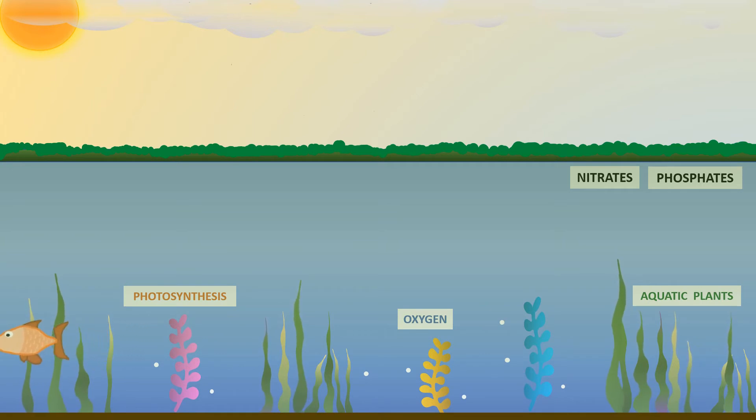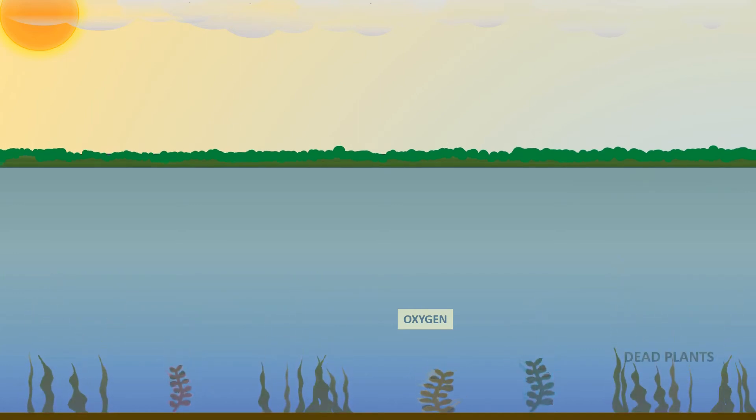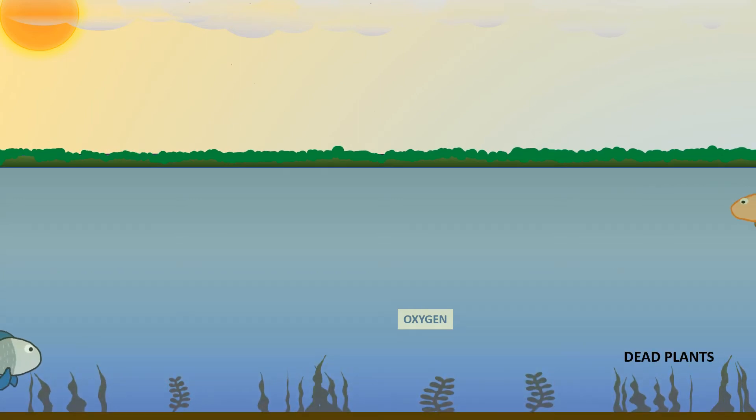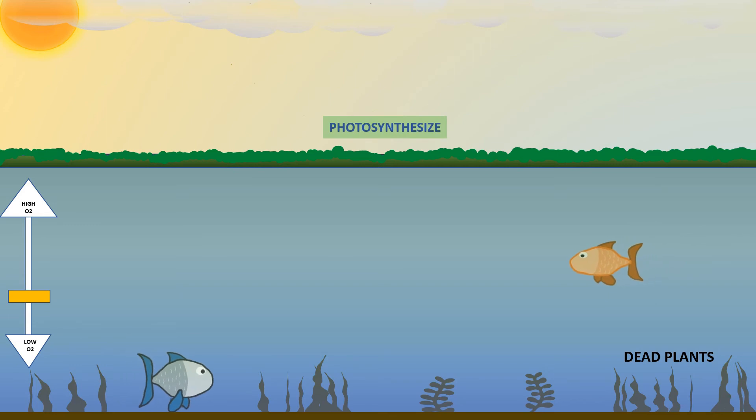In the absence and limited sunlight, aquatic plants can no longer conduct photosynthesis and eventually will die. This results in reduction and depletion of oxygen. Although algae can photosynthesize and produce oxygen, the lifespan of algae is short and therefore they too will die.